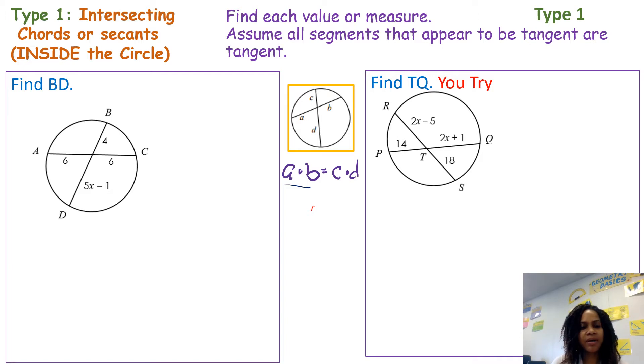For this one, I'm going to multiply 4 times 5x minus 1 because it's on the same segment, equals 6 times 6. I just use algebra skills to solve this equation. 4 times 5x is 20x, 4 times 1 is negative 4, so that's negative 1 equals 36. We're left with this basic two-step equation. 36 plus 4 is 40, dividing by 20, so x equals 2.